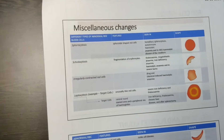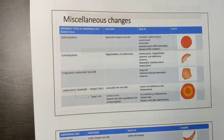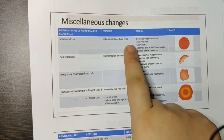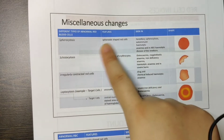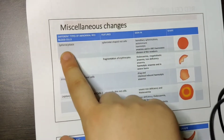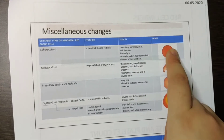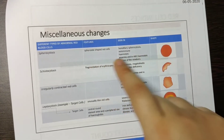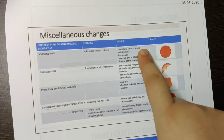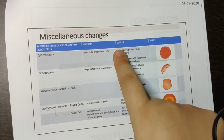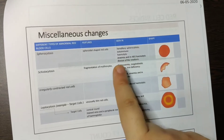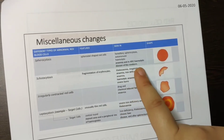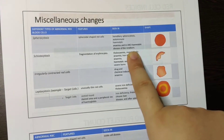One by one, first is spherocytosis. In spherocytosis, you will have a spheroidal shape of cells — it looks like a sphere. These are seen in hereditary spherocytosis (it's in the name itself), hemolytic anemia, and also in newborns — hemolytic disorder of the newborn.